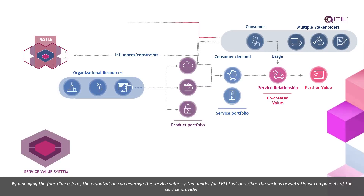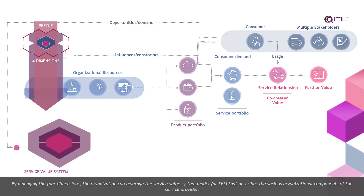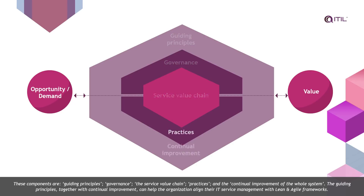By managing the four dimensions, the organisation can leverage the Service Value System Model, or SVS, that describes the various organisational components of the service provider. These components are guiding principles, governance, the service value chain, practices and the continual improvement of the whole system. The guiding principles, together with continual improvement, can help the organisation align their IT service management with lean and agile frameworks.